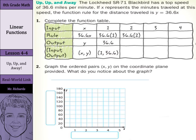What about the 2? Well, we have 36.6 times 2, and that is 73.2. And so our ordered pair is the 2 minutes and the 73.2 miles. What about 3? Well, that would be 36.6 times 3. So our ordered pair is 3 comma 109.8. For 4, we have 36.6 times 4, which is 146.4. And this is 4 comma 146.4.